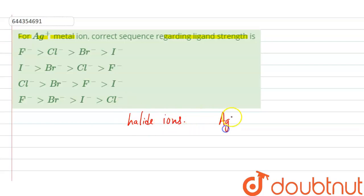So silver ion is a large size ion, so it can be stabilized. It is stabilized by large ligand only.